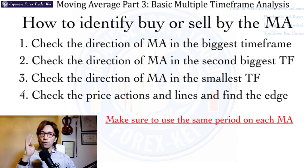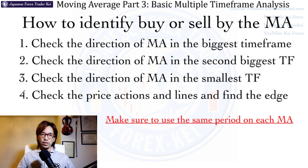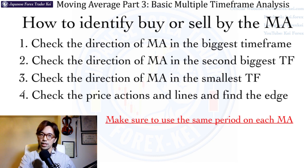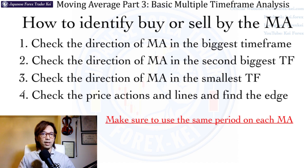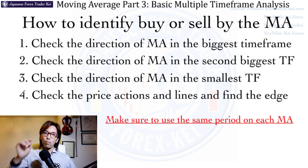In contrast, if daily, 4-hour, and 1-hour all show it's bearish, then wait until the MA shows downwards on lower timeframes like the 15-minute or 5-minute chart. Then wait for price action to be lower high, lower low, and look for somewhere to place a sell. And when the moving average in the bigger timeframe is horizontal — meaning the bigger timeframe is in a range — all you can do is just wait until it points upwards or downwards, otherwise you cannot have a great trade chance.